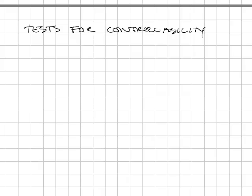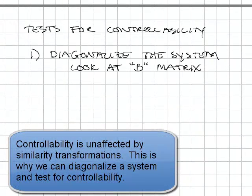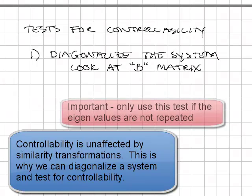We are going to look at two tests for controllability. The first test is to diagonalize a system and look at the B matrix. This is what I did in the previous example. Here's another example.